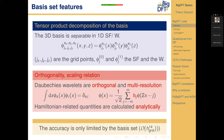Daubechies wavelets are defined by a scaling relation that links the scaling function from one resolution to a finer resolution via filters aⱼ, whose values define the wavelets. These are known analytically and are used to calculate all quantities needed for the calculation. In our case, the precision behaves like the grid step to the power of 14, which allows grid steps of the order of 0.2 Ångströms to be used.